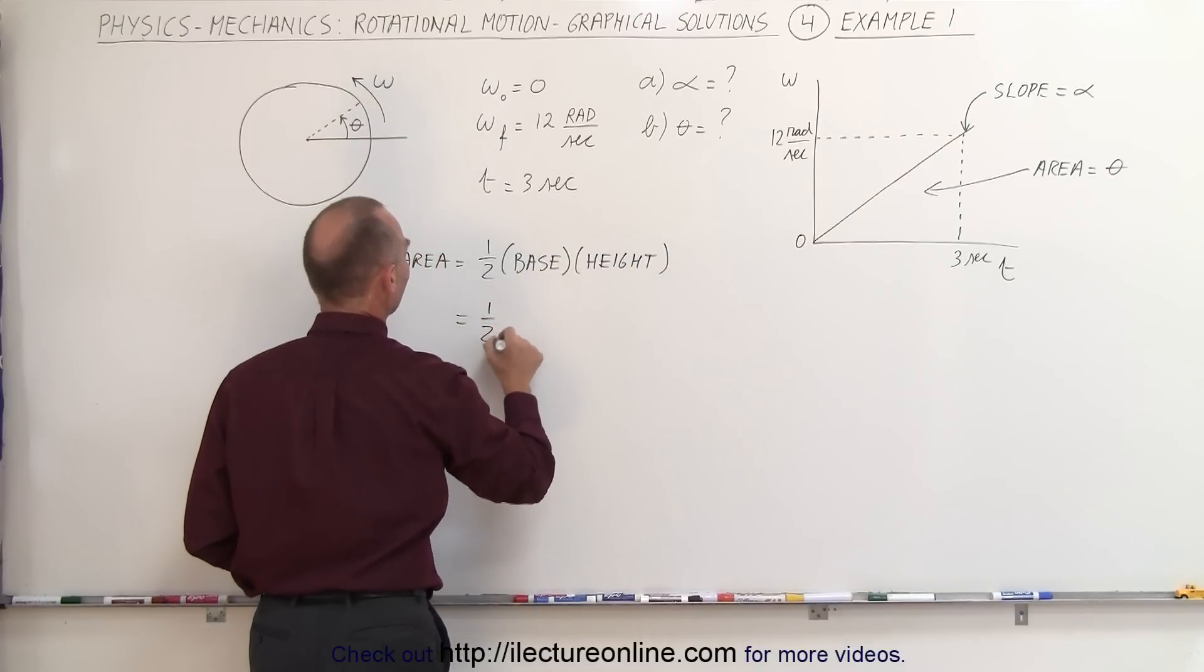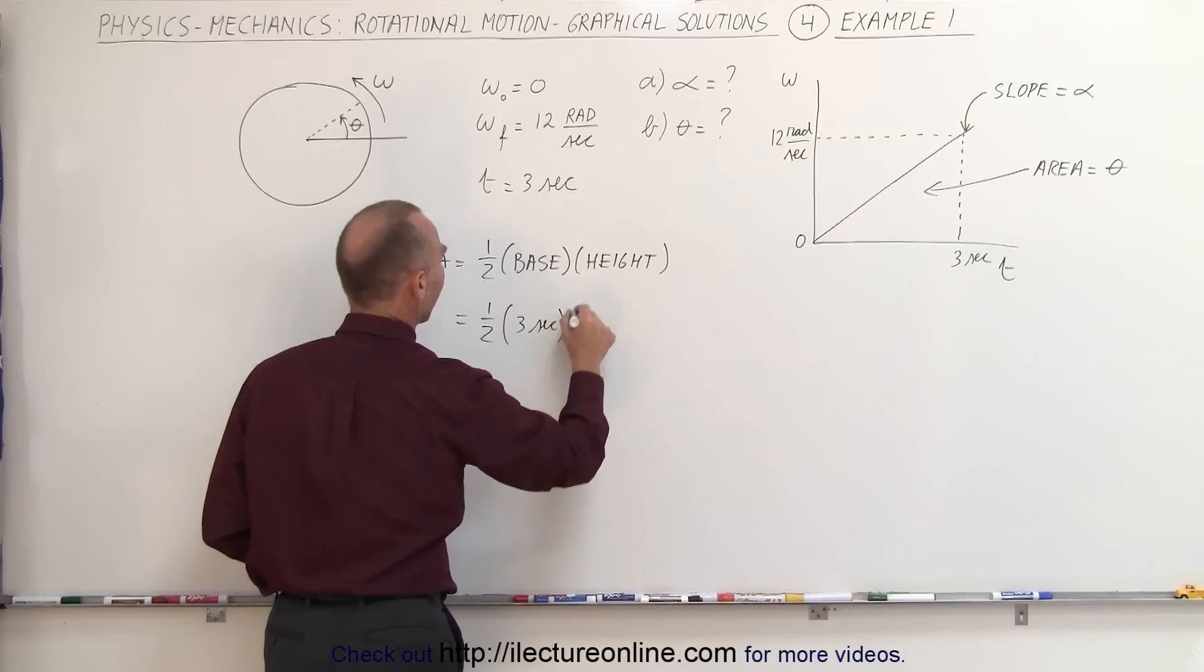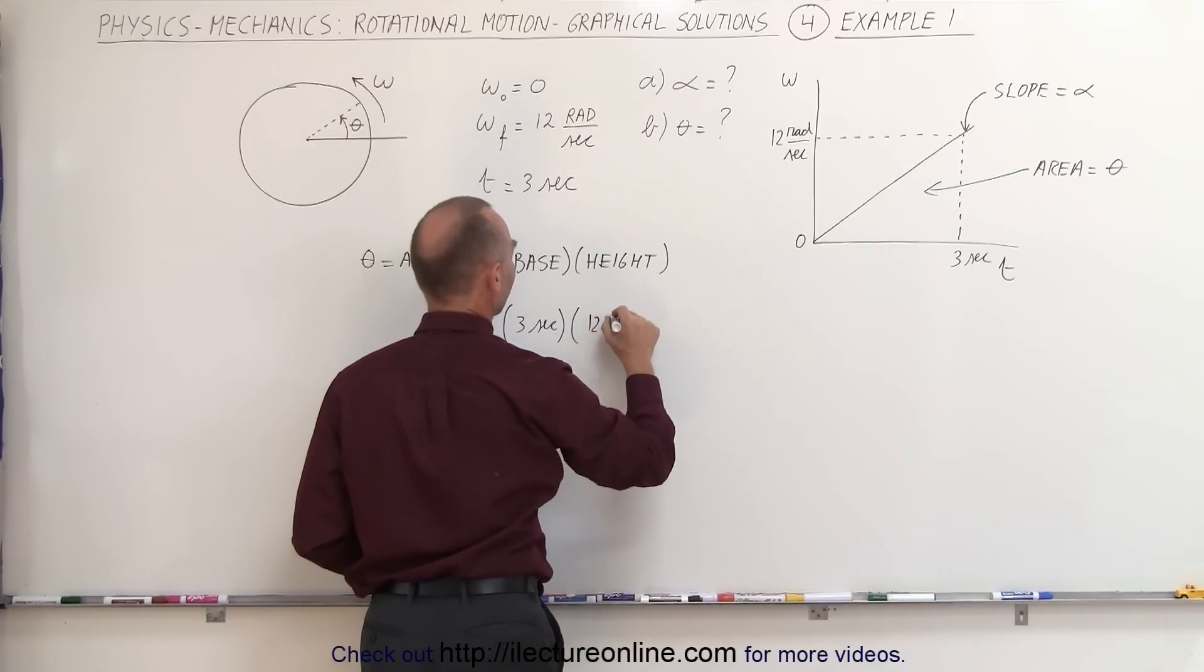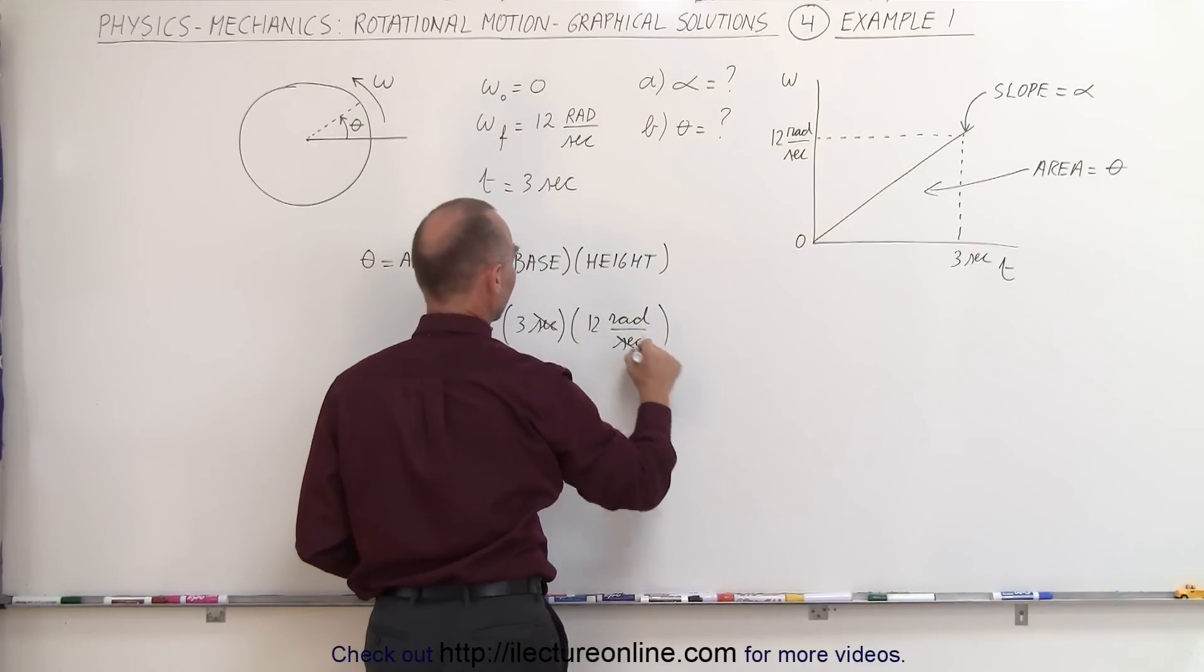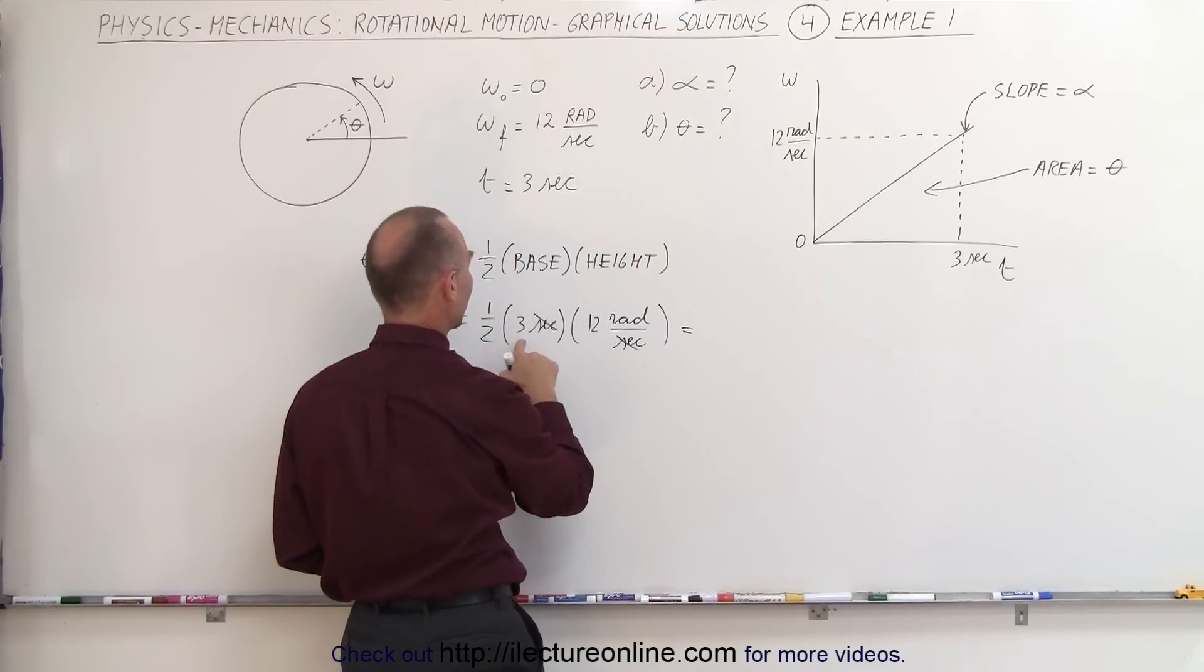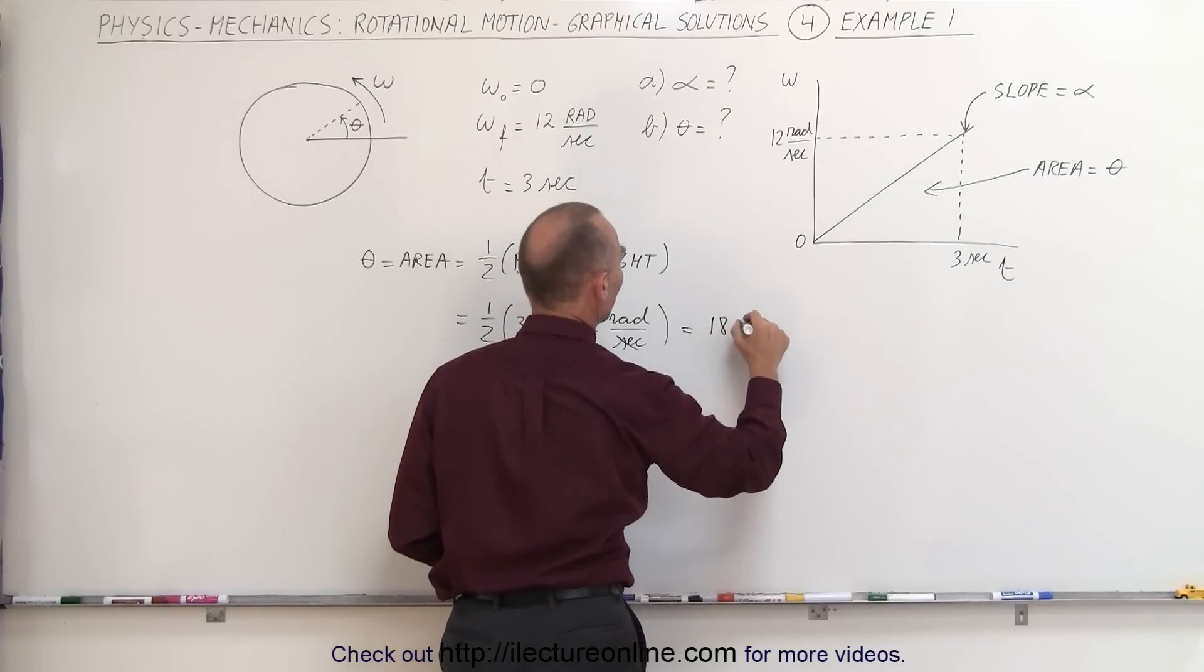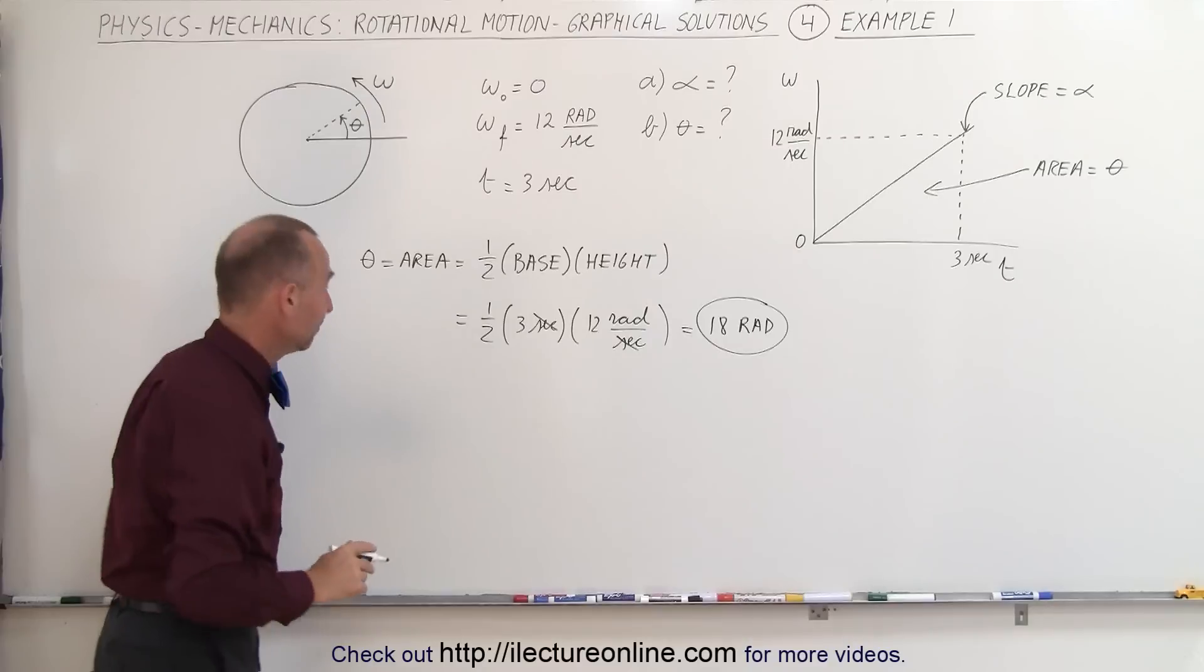So this is equal to one-half times the base which is equal to three seconds and the height from 0 to 12 radians per second. So that's 12 radians per second. Notice that the seconds cancel out when the radians and we have one-half times 3 times 12, that's 6 times 3 which is 18 radians. 18 radians is the angular distance covered. So that was pretty easy wasn't it?